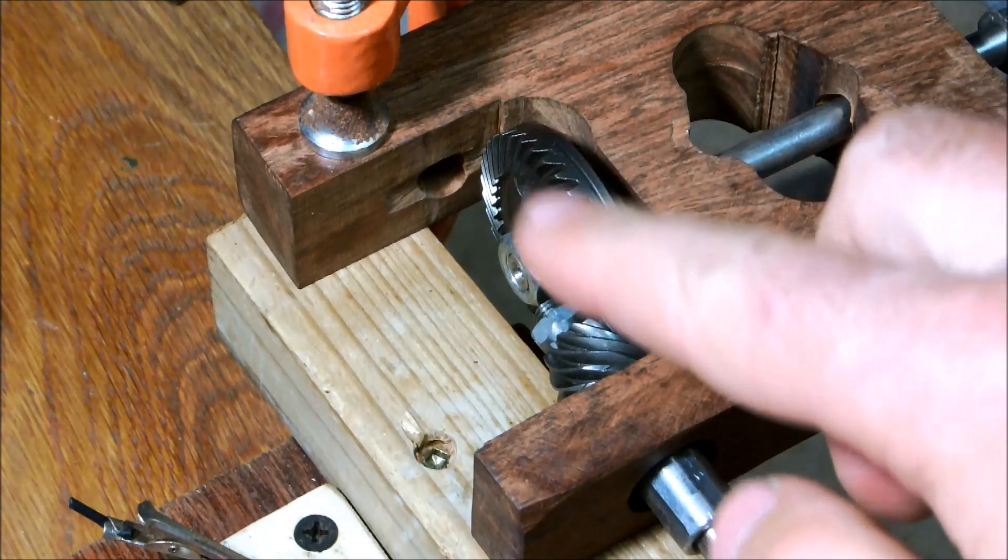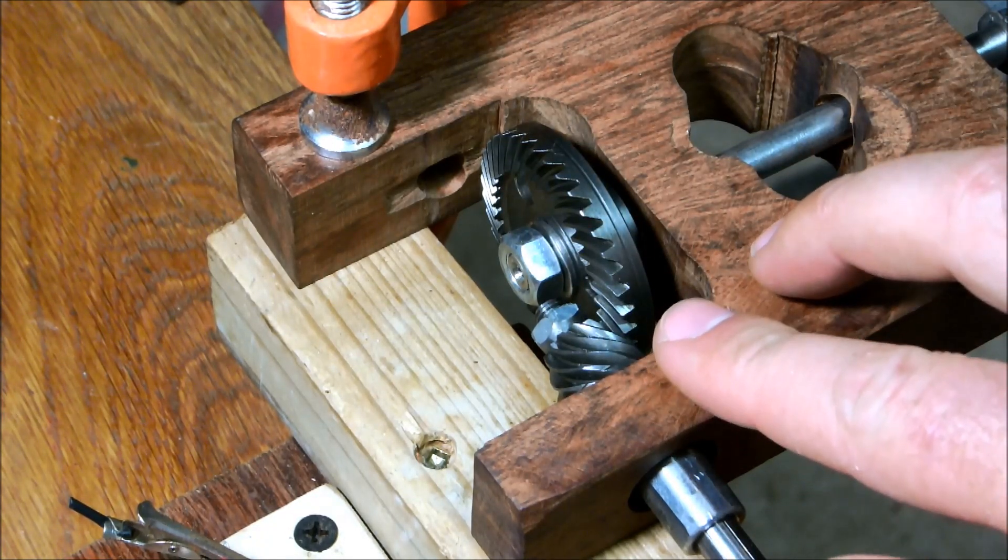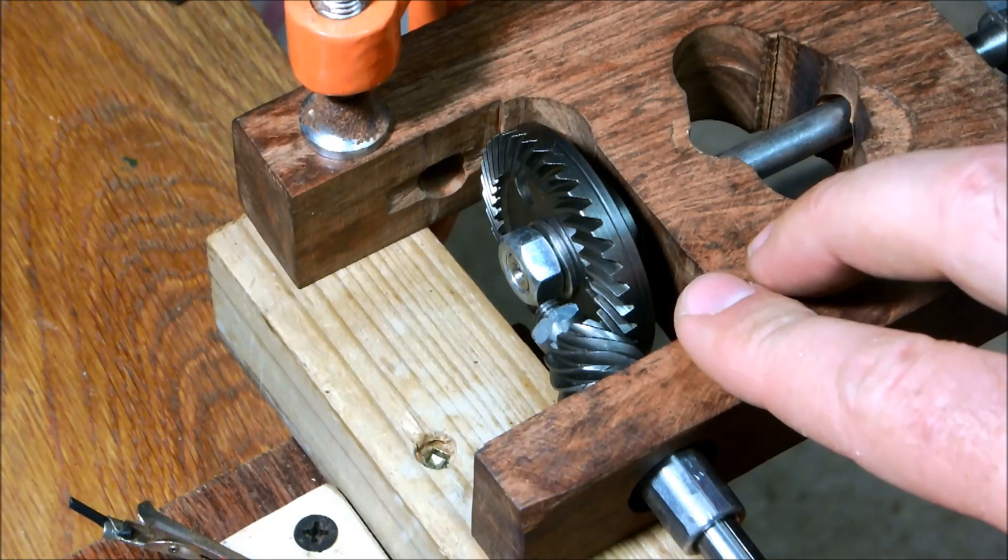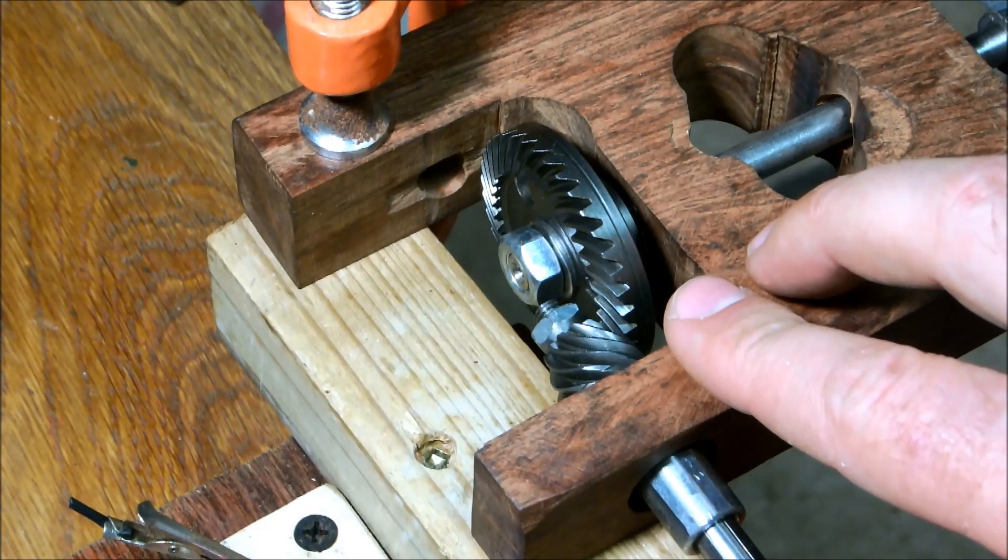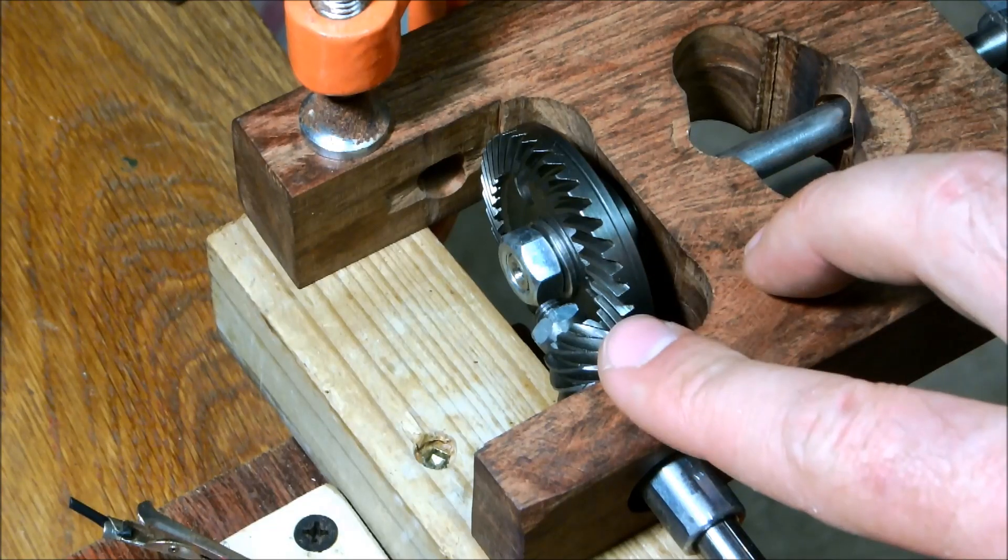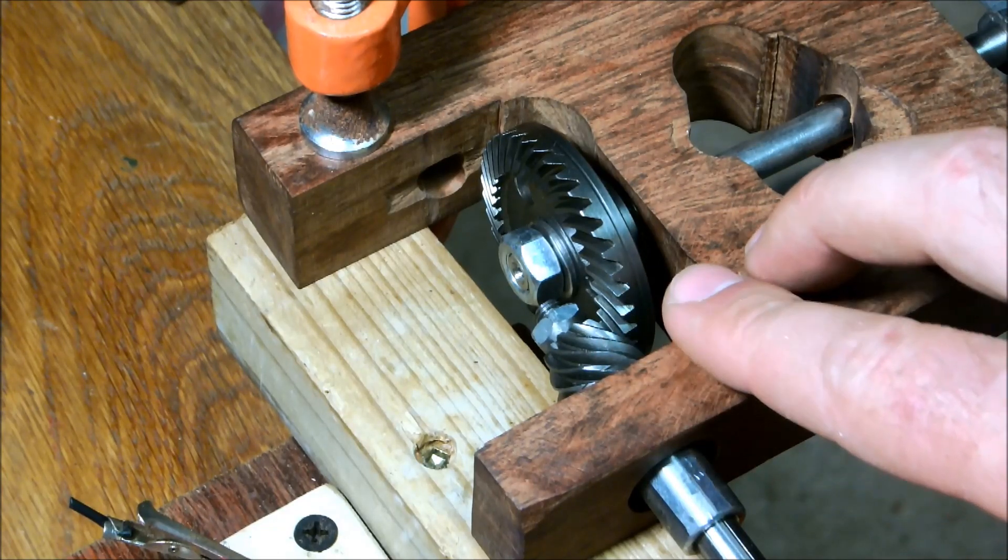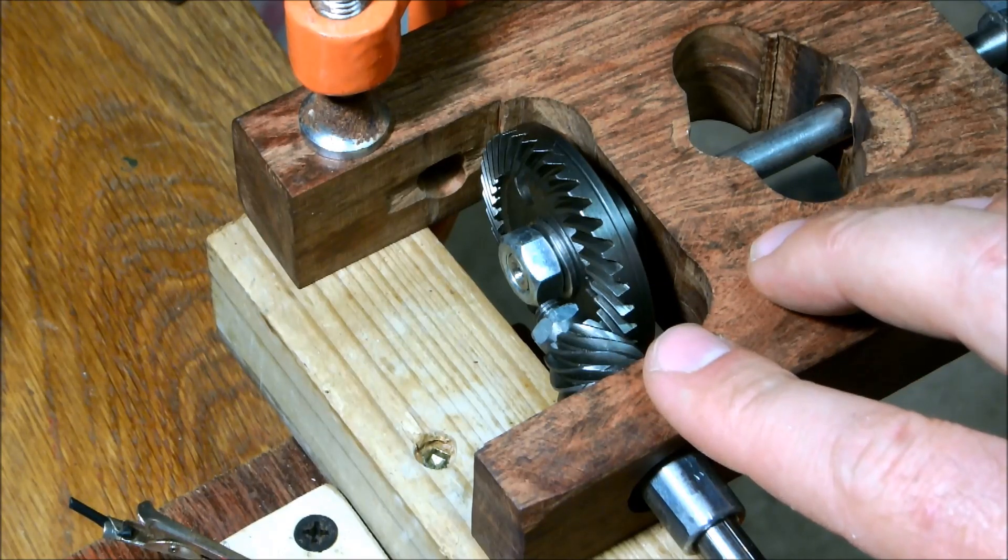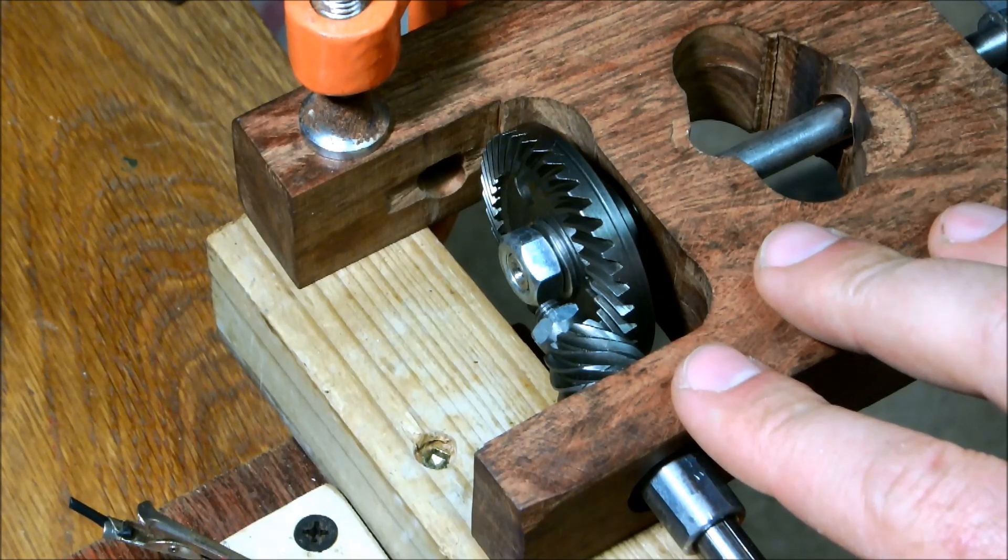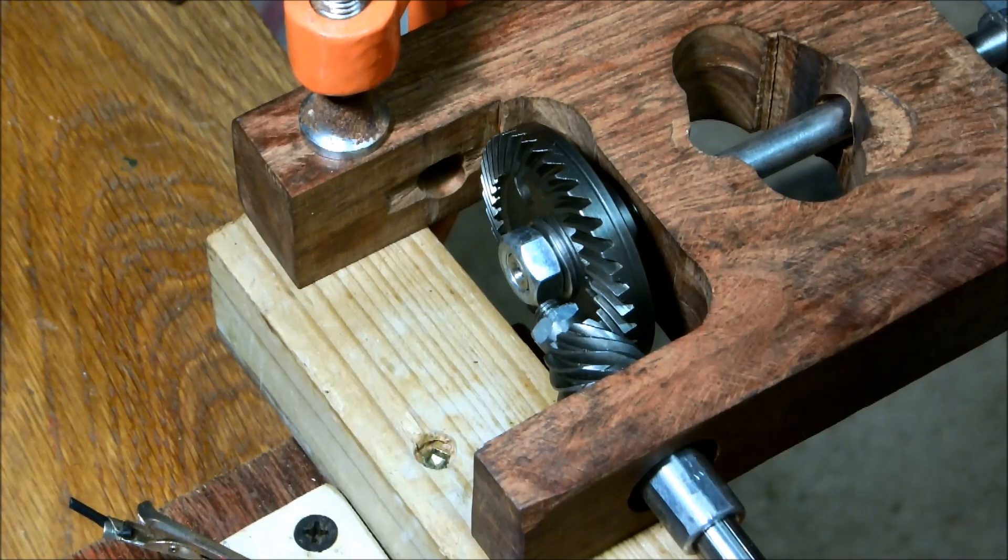These spiral bevel gears were bought as a set. They supply them as replacement parts for small angle grinders. These were specifically for one of the Makita models. It's a 3.7 to 1 reduction ratio, so it should give me a really nice slow RPM on the propeller shaft.